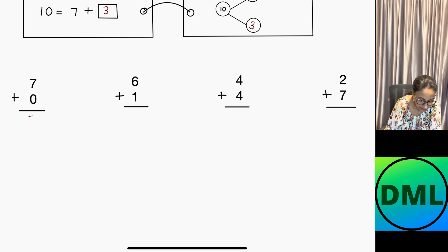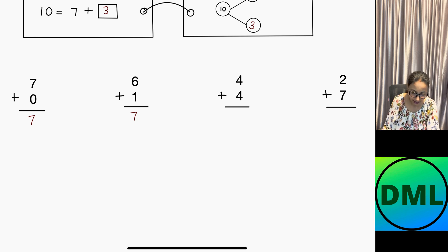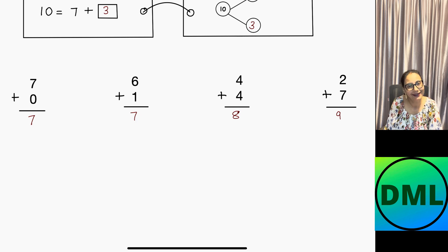Let's see the next examples. You can also add 7 plus 0, which is 7, because we are not adding anything. Then 6 plus 1 is 7. Then 4 plus 4: counting 4, 5, 6, 7, 8 — the answer is 8. Then 2 plus 7: 7 is the bigger number, so counting on 7, 8, 9 — the answer is 9. Thank you so much for watching! I hope you enjoyed the video. Don't forget to like, subscribe, and leave a comment down below. Bye bye everyone!